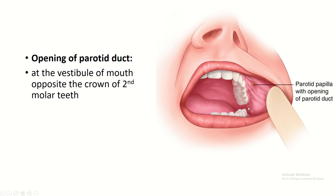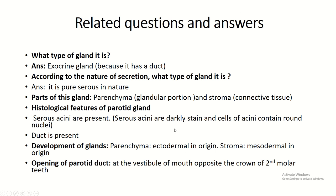The opening of the parotid duct is into the vestibule of the mouth, opposite the crown of the second upper molar tooth. These are the summary questions asked in the surface anatomy exam.